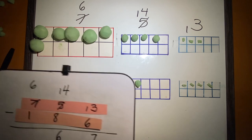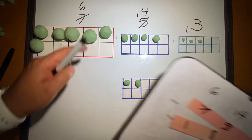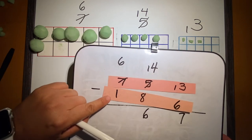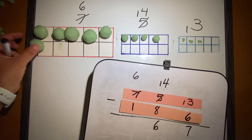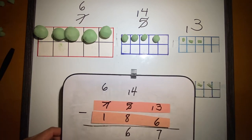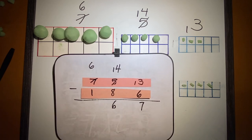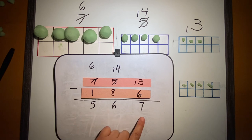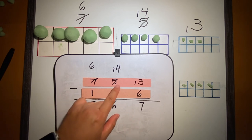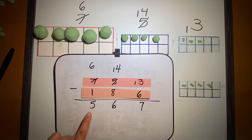Now I go to the hundreds place, and in the hundreds place I have six and I have to take away only one, so this is easy because I don't have to convert anything. I have five left. So the answer to this subtraction is 567 — 753 minus 186 is 567.